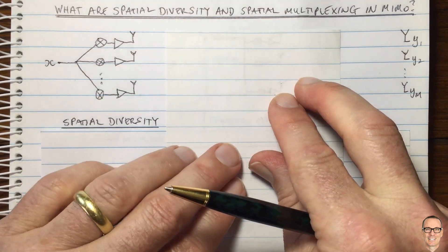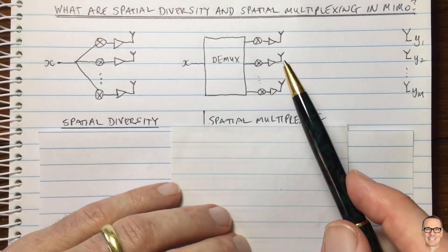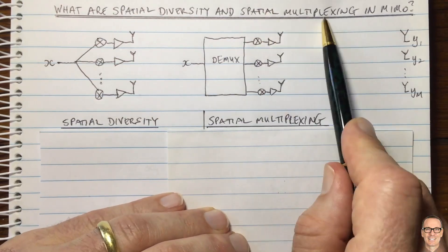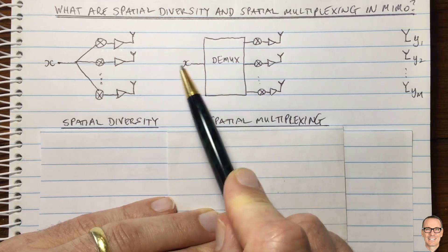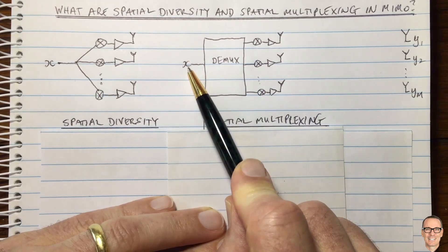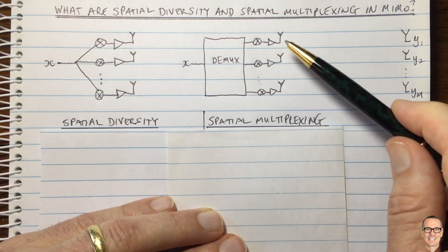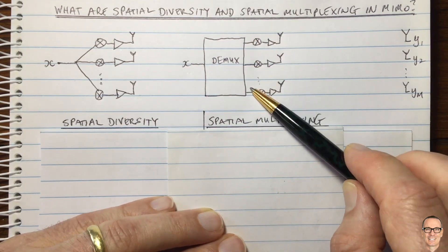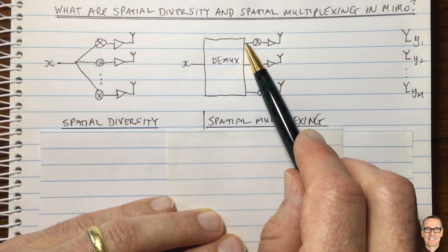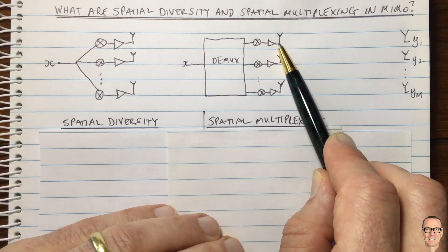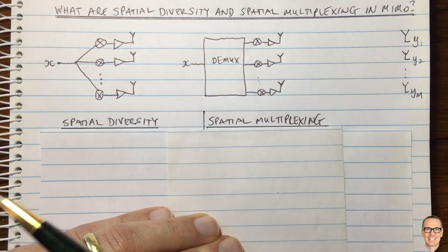We could also do something else. Here's spatial multiplexing. Now in this case, we take our input data sequence, which is a high rate data sequence, and instead we demultiplex it into M lower rate data sequences. And then each signal gets sent off its own antenna. Each of these lower rate data signals goes off its own antenna.